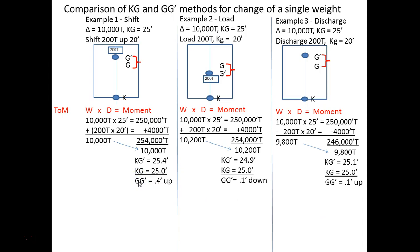There are two different ways to think about this. We can calculate KG-prime — the new KG — compare it to the old one and see how much it changed. That difference is the shift of G, or GG. G moved to G-prime in each case — 0.4 up, 0.1 down, 0.1 up. That is a subtle difference between the theory of moments and what we're going to do next. We're going to use the shift of G formula, which is most convenient when only one weight is moving.